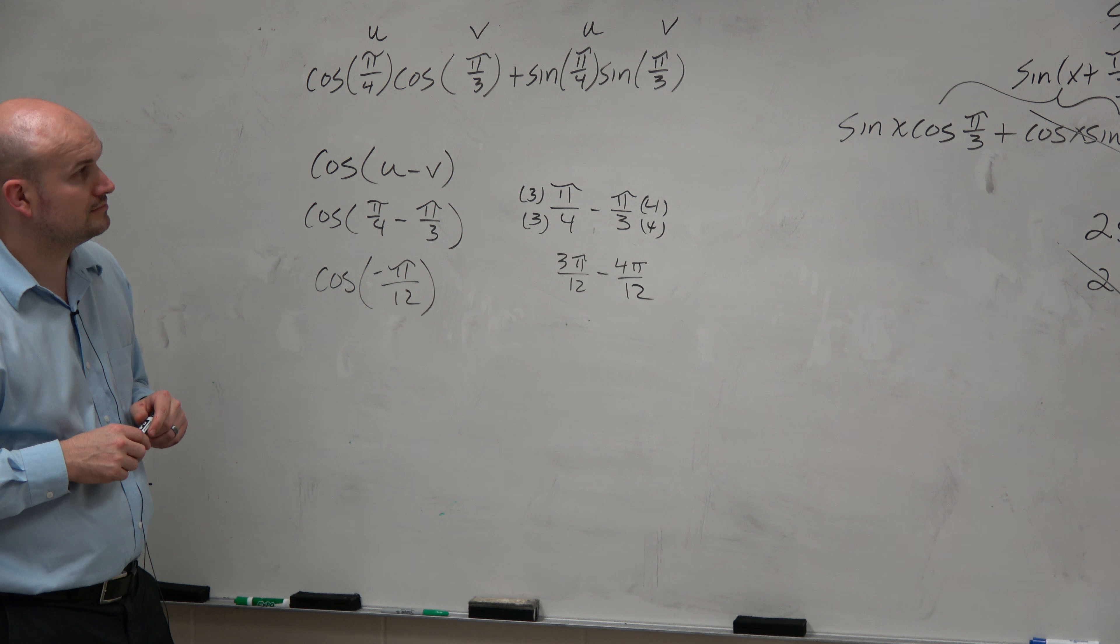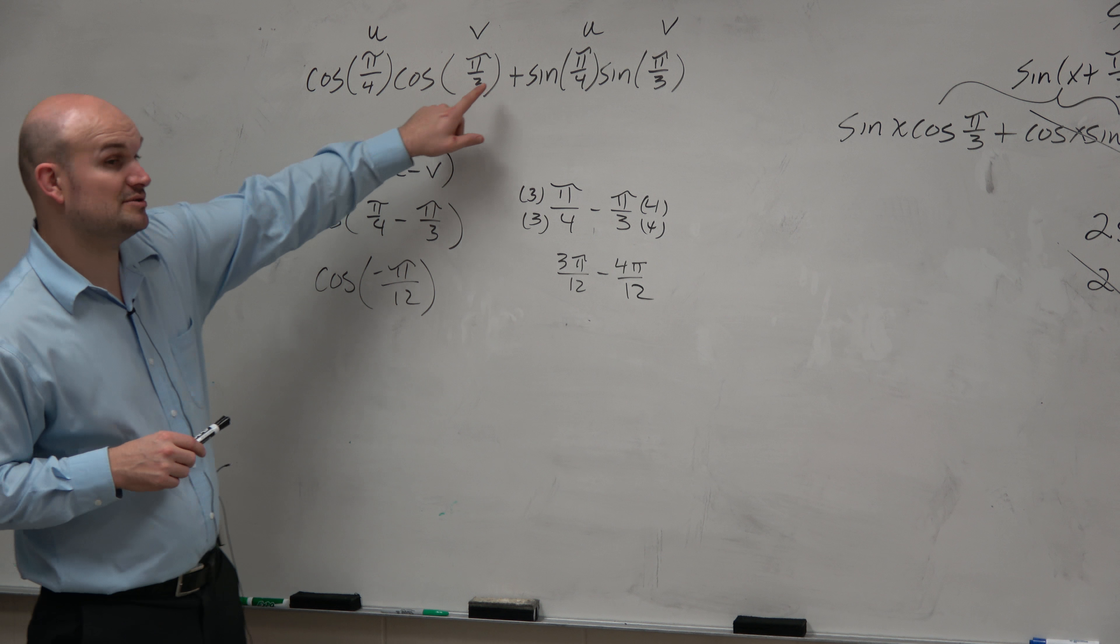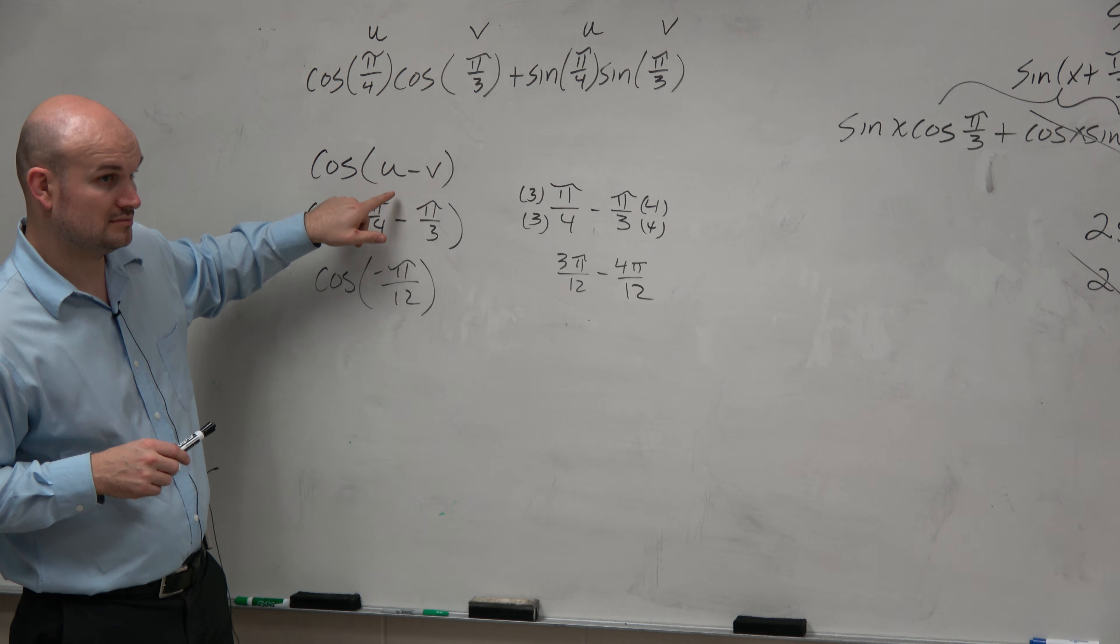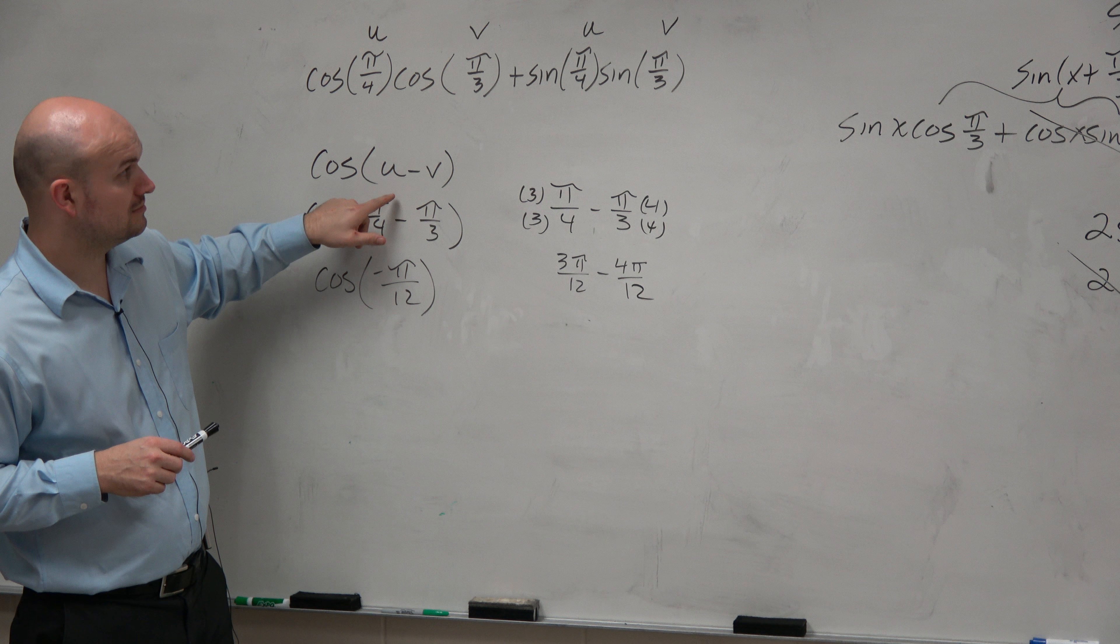Wait, why didn't you just add the pi over 12? You're not adding, you're subtracting. Yeah, what happened to the sine? This is the formula. This is the formula for cosine of u minus v. For number 2.